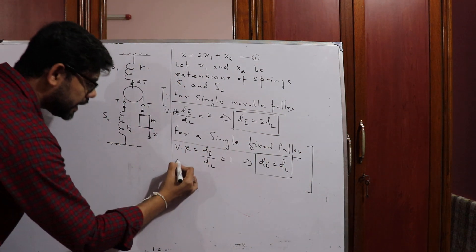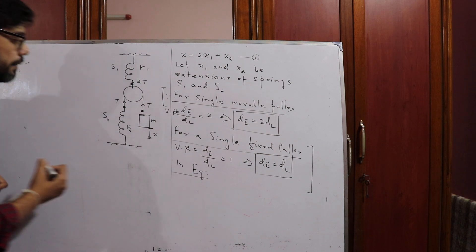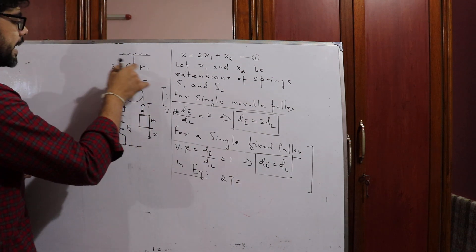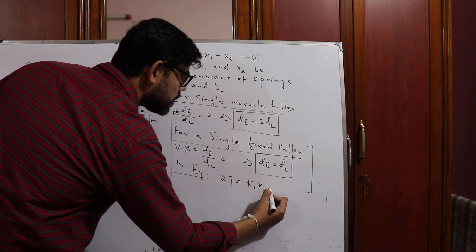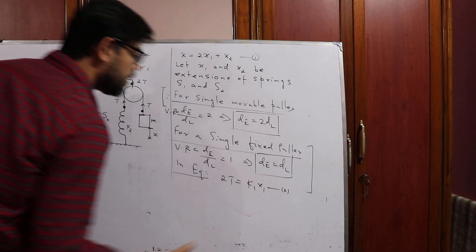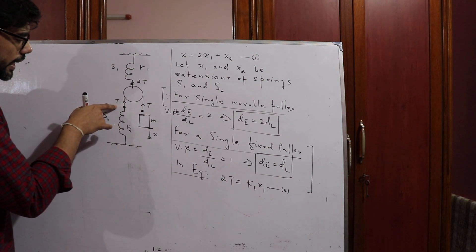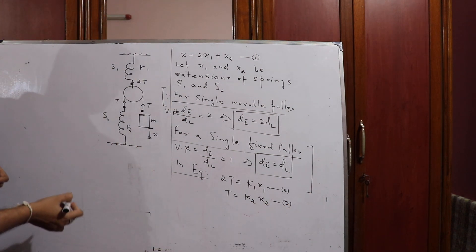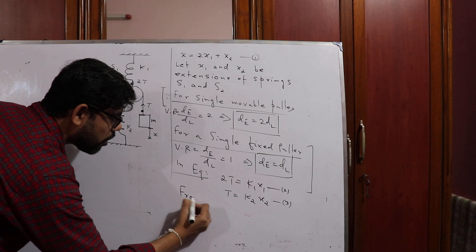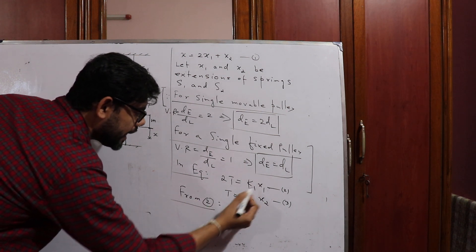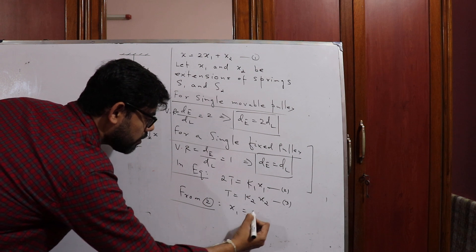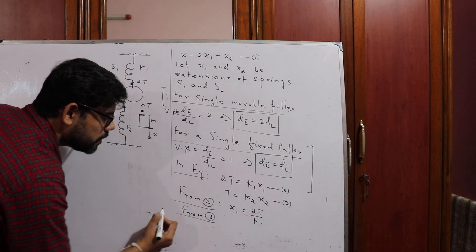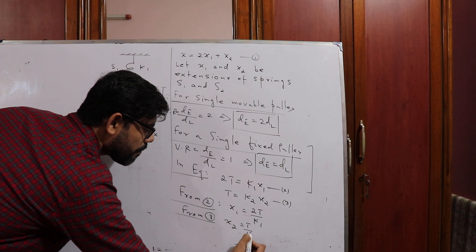In equilibrium, 2T = k1·x1 — let this be equation 2. And T = k2·x2 — let this be equation 3. From equation 2, we get x1 = 2T/k1. From equation 3, we get x2 = T/k2.